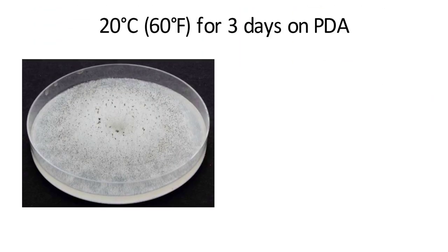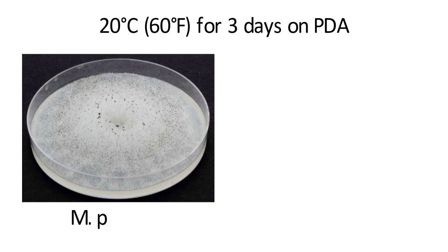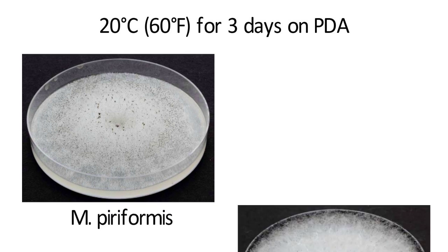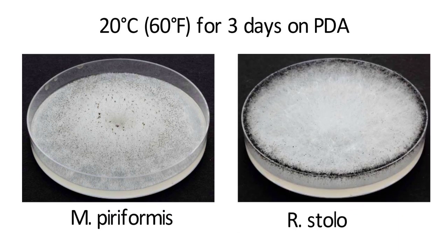Both fungi filled the PDA plate on the third day. Mucor piliformis produced sporangia from the center to the edge as they developed. Rhizopus stolonifer produced abundant black sporangia mainly on the edge of the plate, forming a black letter O shape.